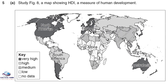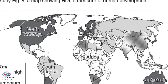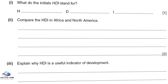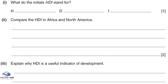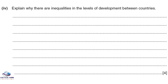As we conclude, here is an exam exercise. These questions show that this content is examinable. This is Section C, question five. Study Figure 8, a map showing HDI. Always look at the key. Question one: what do the initials HDI stand for? Question two: compare the HDI in Africa and North America. Question three: explain why HDI is a useful indicator of development. Question four (four marks): explain why there are inequalities in the level of development between countries. Write up your answers and forward them so I can assess how well you have done.